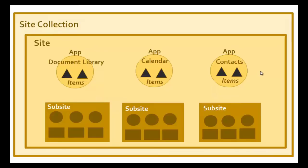Once we create a subsite we'll find that it can again contain things like document libraries, calendars, contacts, and items within that. To give us a better idea, let's go out and have a look at where we get access to the site collections in Office 365.